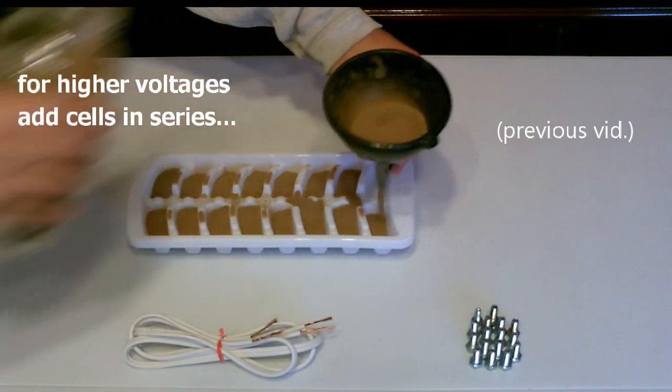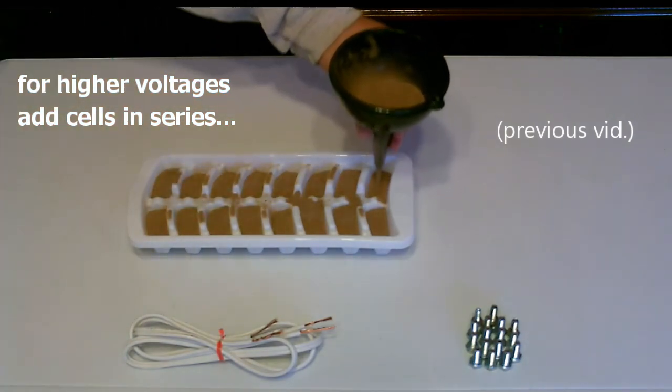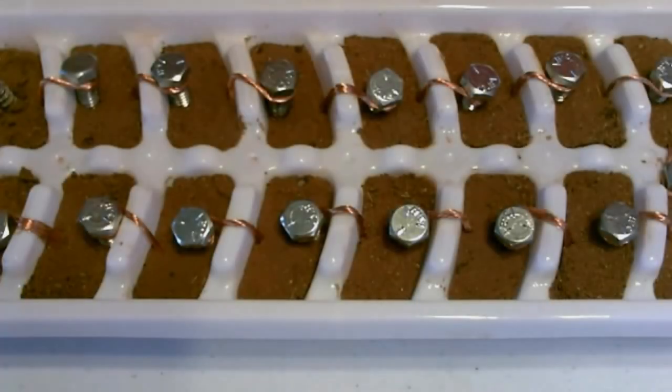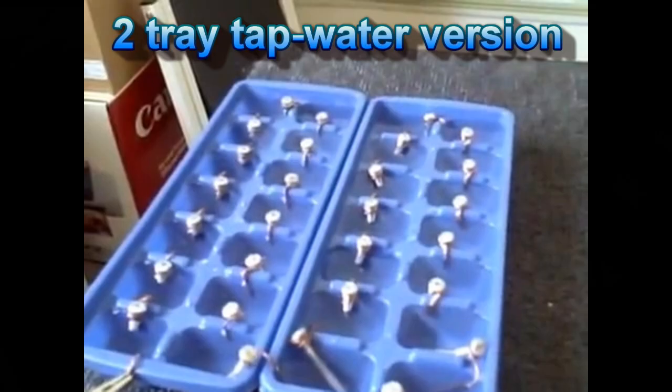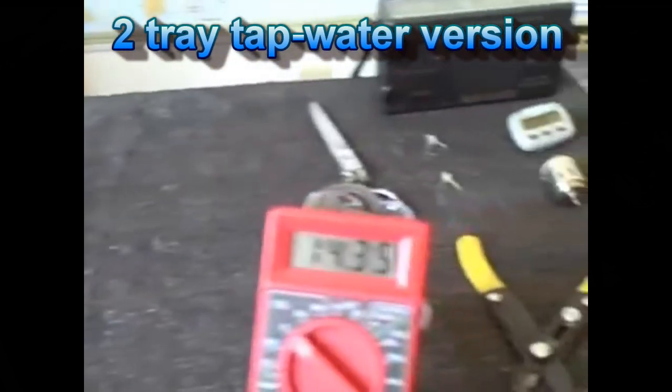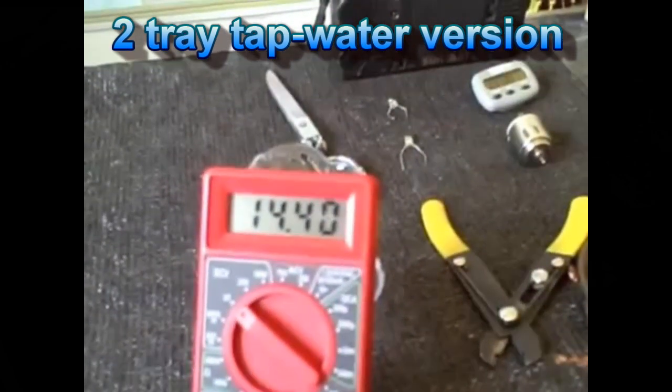This one's a previous vid I did with a plastic ice cube tray, a 16 cell system. You just hook them in series, and this one would be good for charging 5 volt electronics. And this one is a 2 tray water battery. The original one I did got it up to 14 volts, so high enough to charge a 12 volt system.